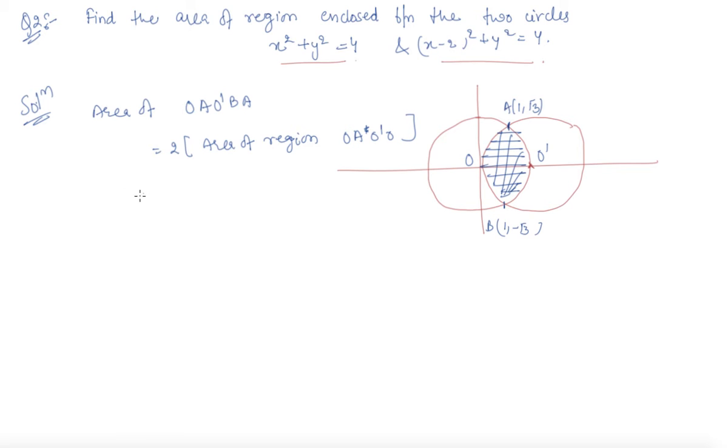So, if I simply divide the whole area in two parts from this to this, one part and this is second part, so this will be twice the area of region O A, let us say this point is D, O A D O and area of region A O dash D A.